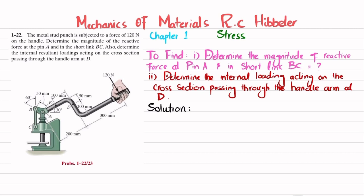Let's start with the solution. First, if you remove link BC, there will be a reaction force at point B — let this force be FBC. And if you remove the pin support at point A, you will have a horizontal reaction force Ax and a vertical reaction force Ay.